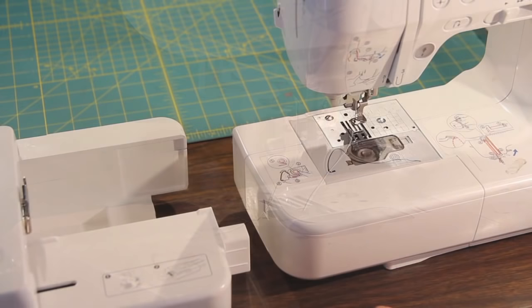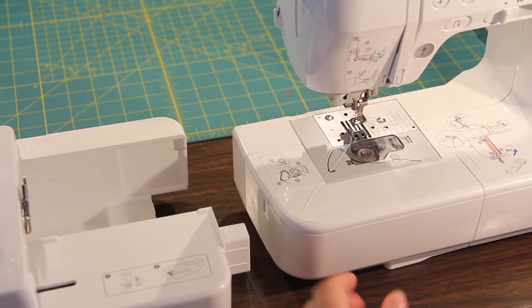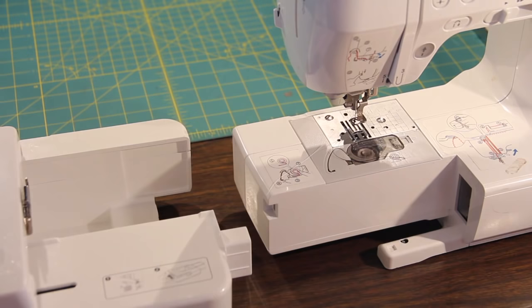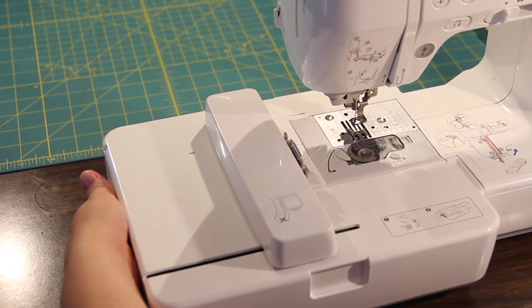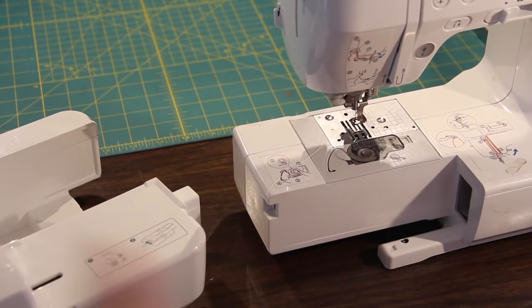So now that we have our embroidery foot installed, we're going to go ahead and put in our embroidery unit. So first you're going to take off this piece that you have right here. And all you do, it is really simple, is just slide it in. Just like that. That's all you have to do. And then to remove it, there's a little lever down here on the side. Pull it in and pull out. That's all you do.